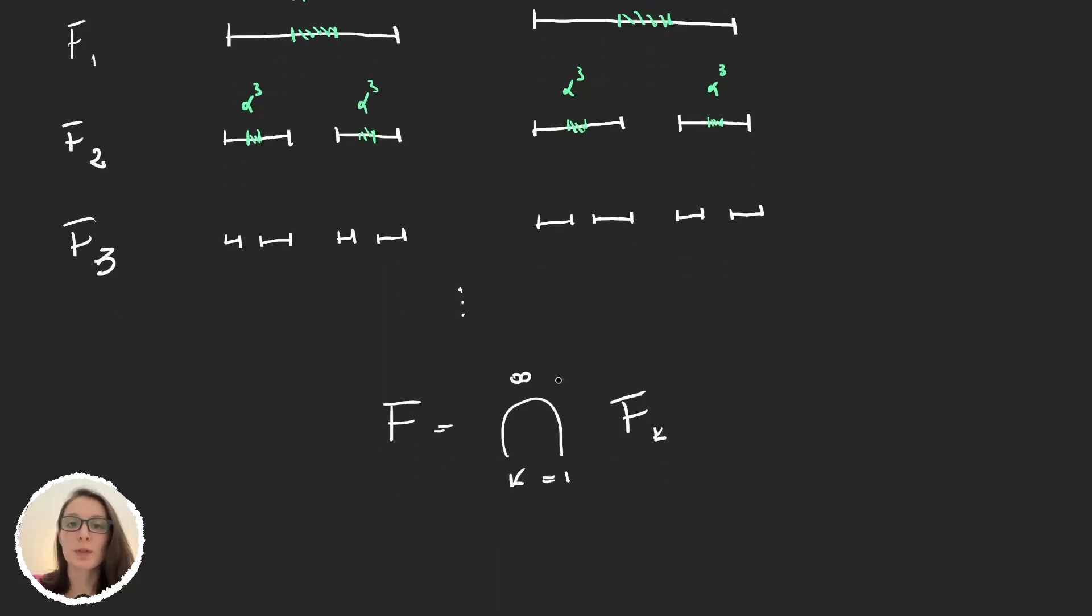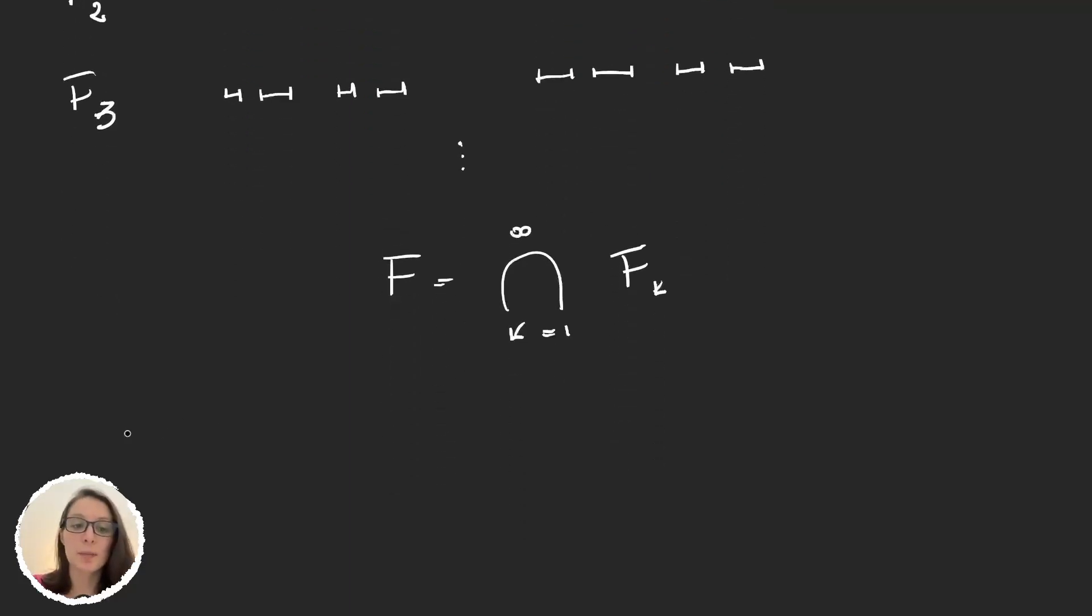And so what we're doing is on the step k, we are removing 2^(k-1) intervals of length α^k.